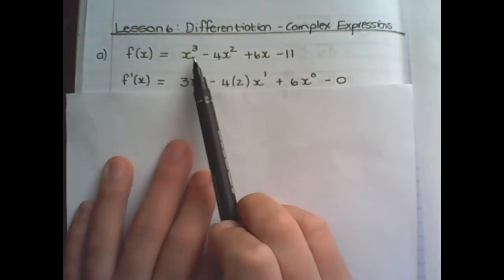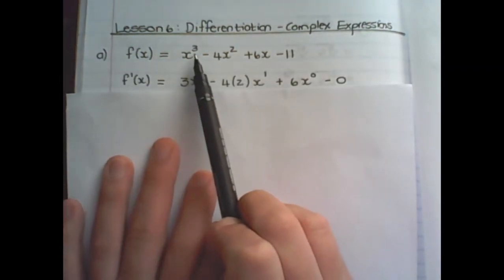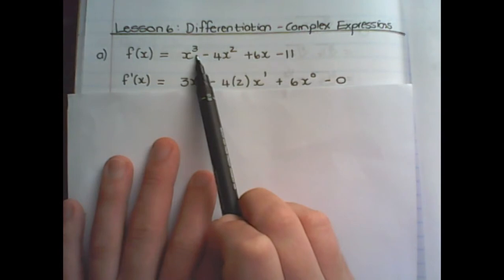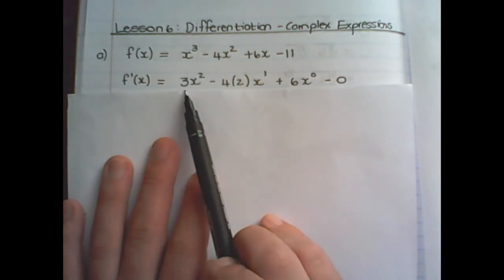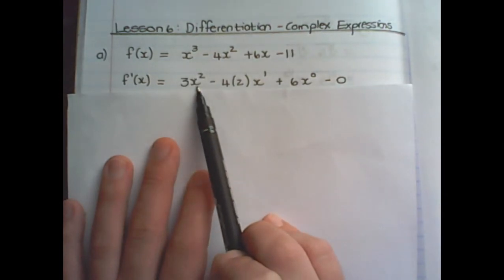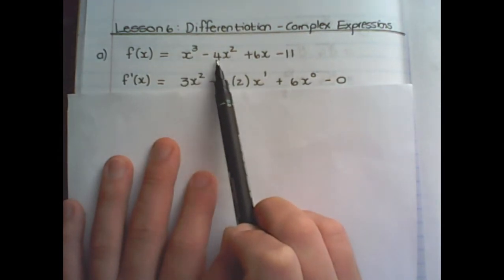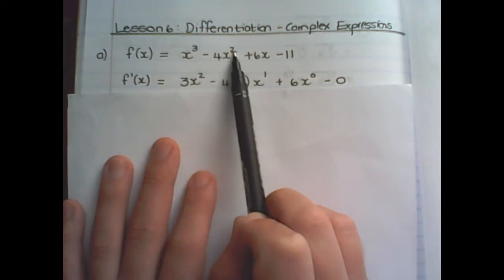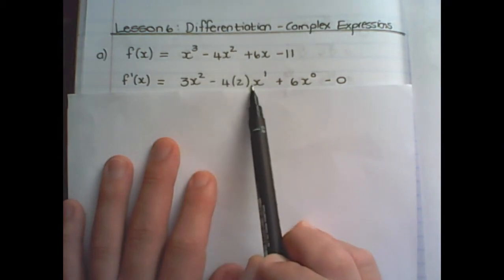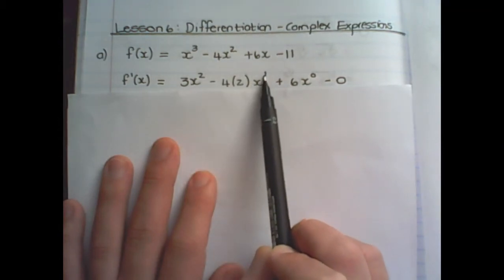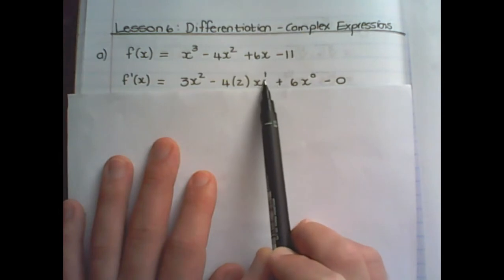For the first term, when I differentiate it becomes 3x squared. The second term is minus 4 times 2, giving x to the power of 2 minus 1, which becomes 1.